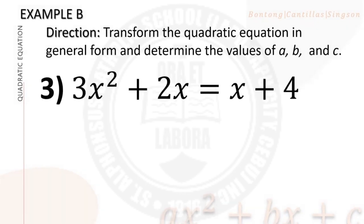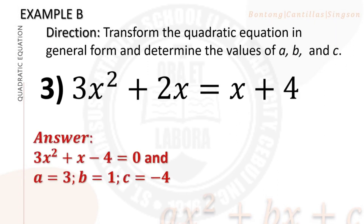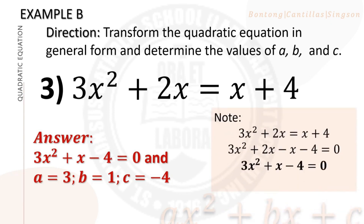Number 3: 3x squared plus 2x equals x plus 4. The general form of this quadratic equation is 3x squared plus x minus 4 equals 0. The values are a equals 3, b equals 1, c equals negative 4. Note that we simplified the given equation in order to arrive at the general form.